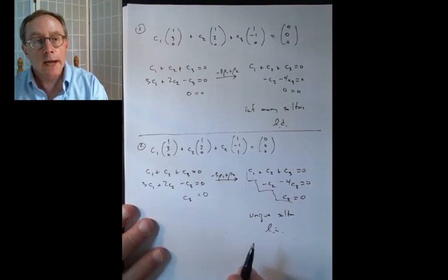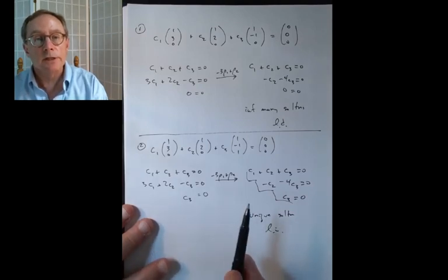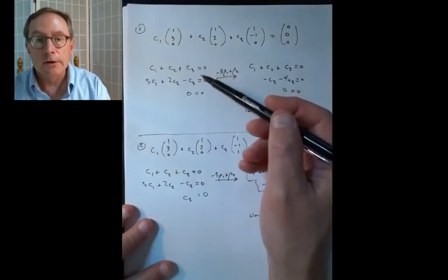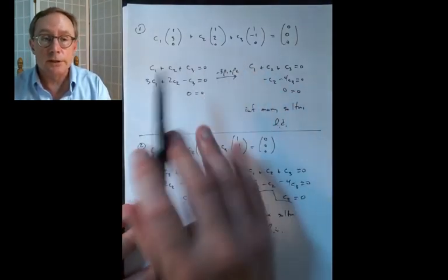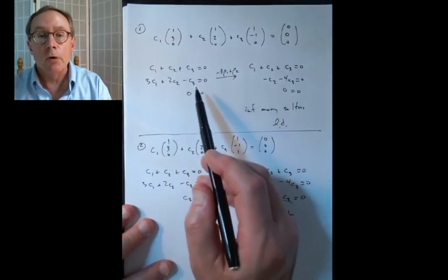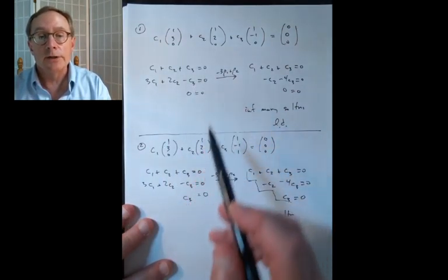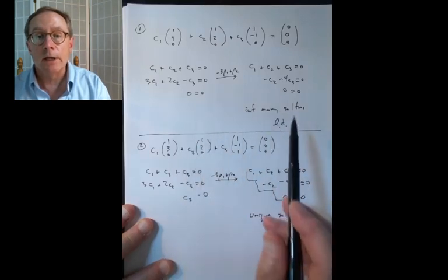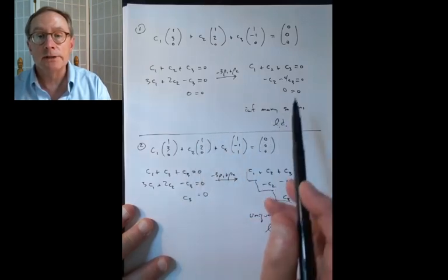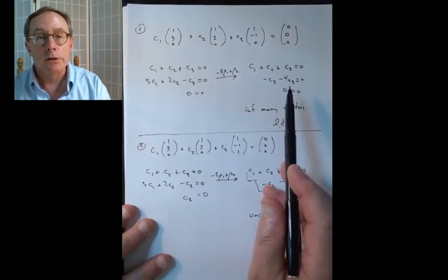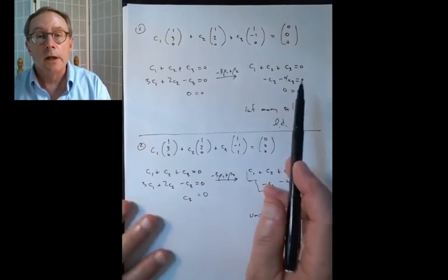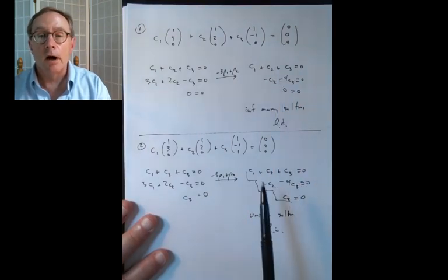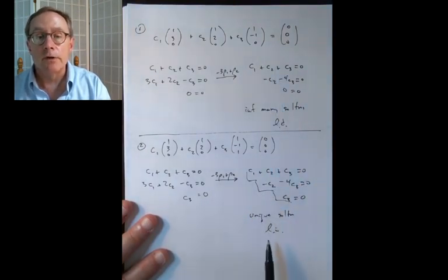Checking linear independence or dependence is very straightforward. You set up the linear system. If you can see at a glance what the dependence is, good for you, but if you don't see it at a glance, you set up the linear system and chug away. Infinitely many solutions implies linear dependence — and you can pick a particular one, for example c3 = 7, which gives you c1 and c2 and lets you exhibit a dependence. On the other hand, a unique solution gives you linear independence.